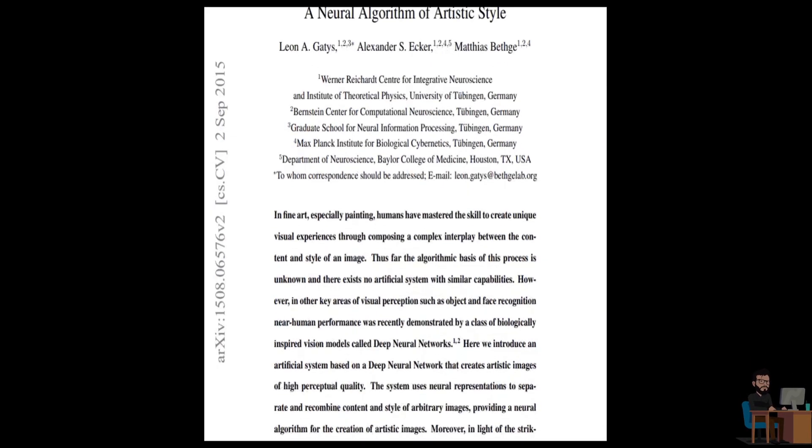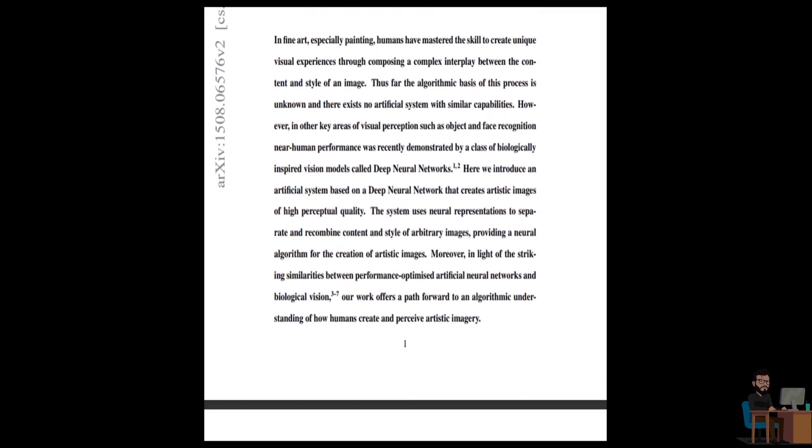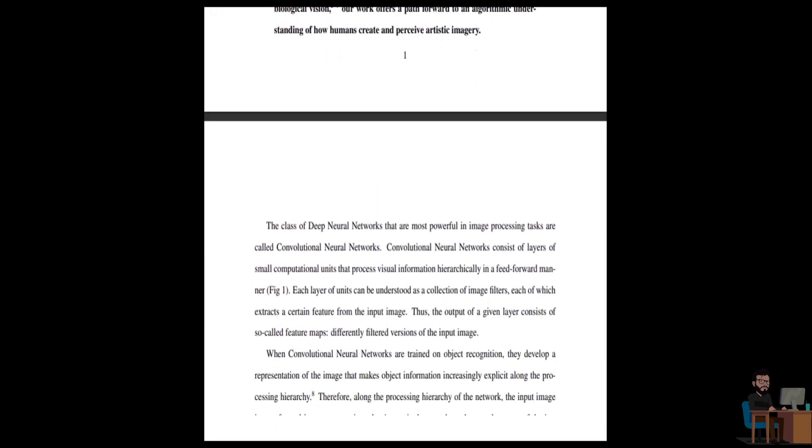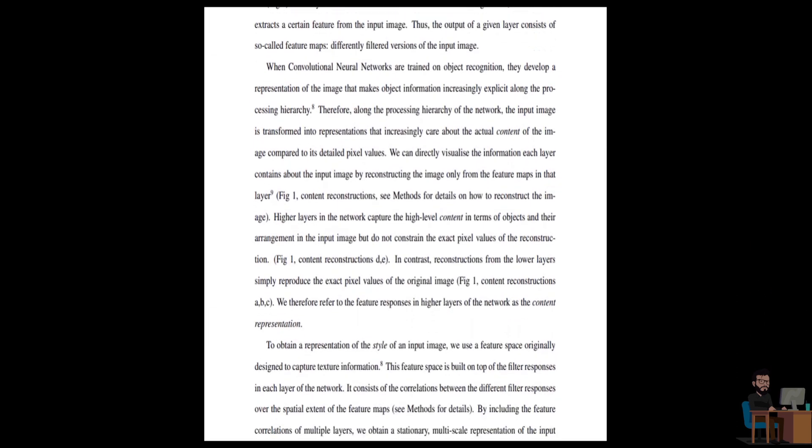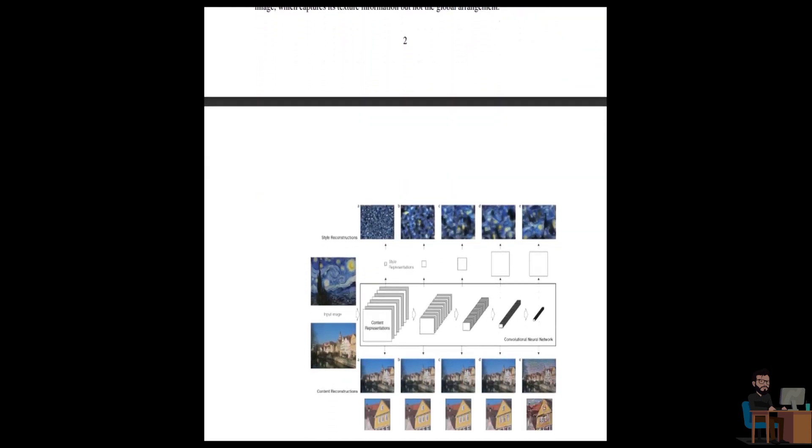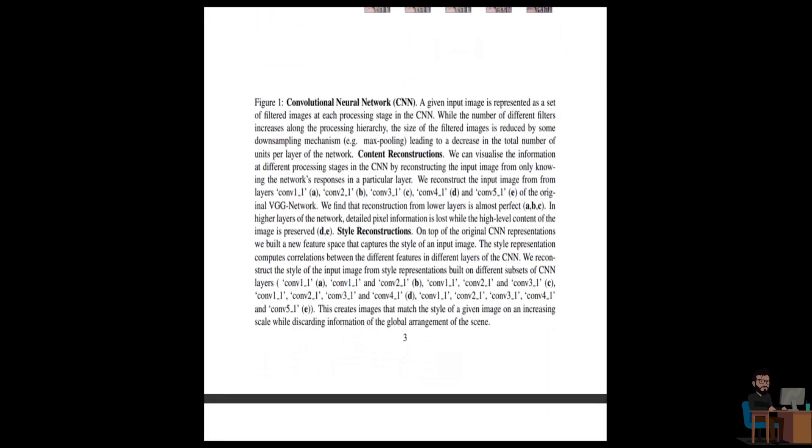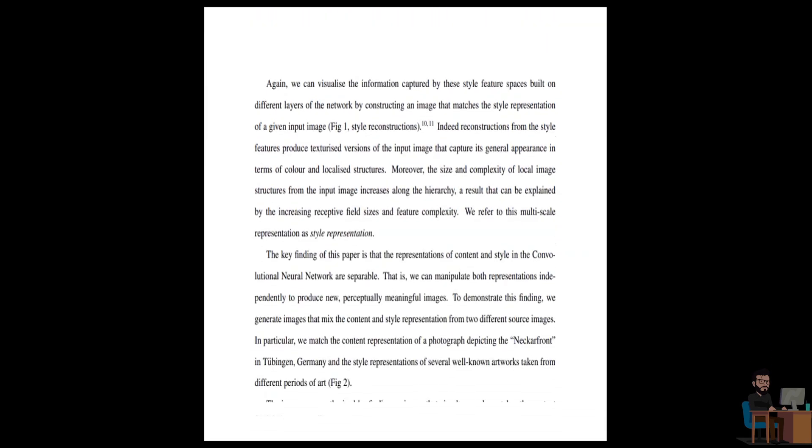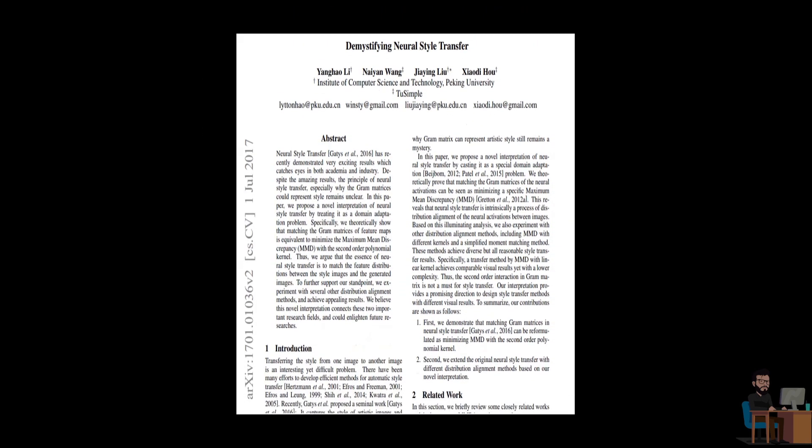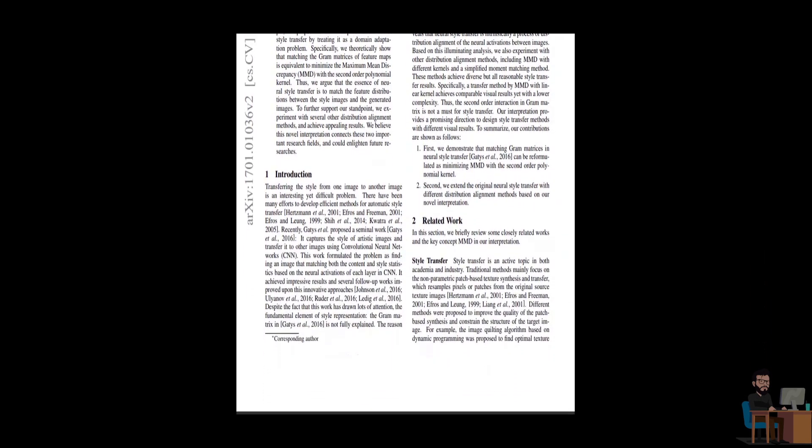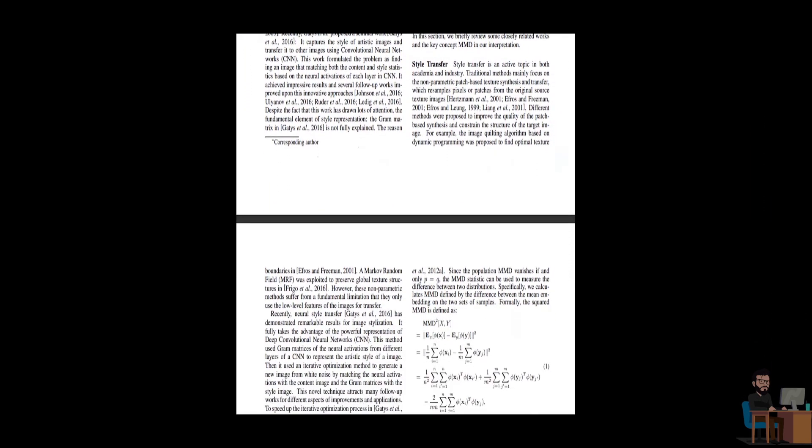While going through this paper which takes an algorithmic approach for style transfer using convolutional neural networks, it uses Gram matrix to capture style from paintings. But this paper failed to explain why they are using this and how it works. Then a year after, another paper came up with the name 'Demystifying Neural Style Transfer' which explained everything in detail which wasn't explained in the original paper.